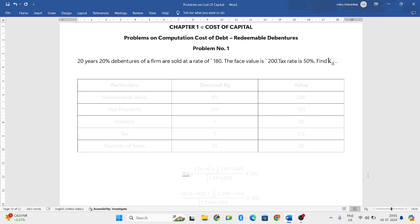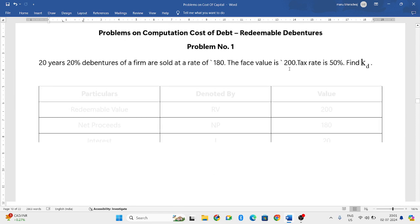So let us take up a problem and find out how to find the cost of debentures. 20 years, 20% debentures of a firm are sold at a rate of 180. The face value, means you can take it as actual value, is 200. Tax rate is 50%. Find cost of debentures.